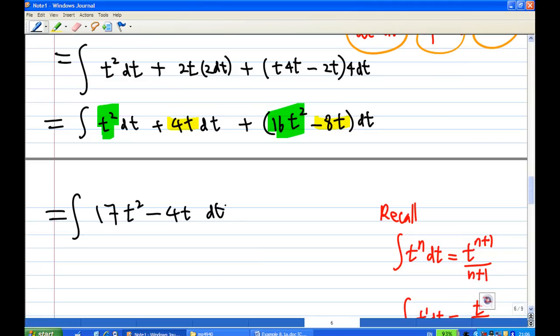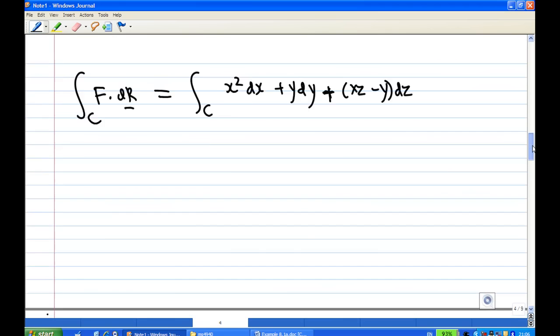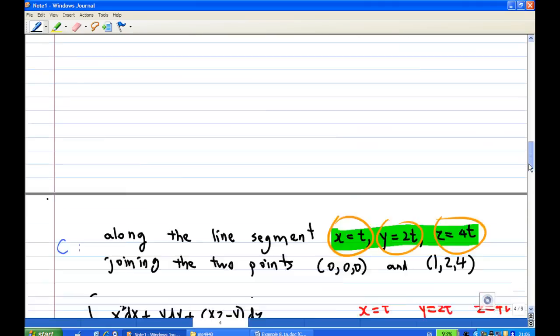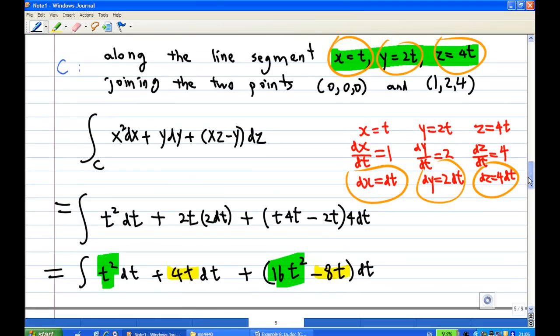Now, then we have to find the limit of t. We know that the path is going from t equal to 0 to t equal to 1. At the point (0,0,0), t equal to 0. At the end, (1,2,4), t is equal to 1. So this integration, the limit of t is actually from t equal to 0 to 1.